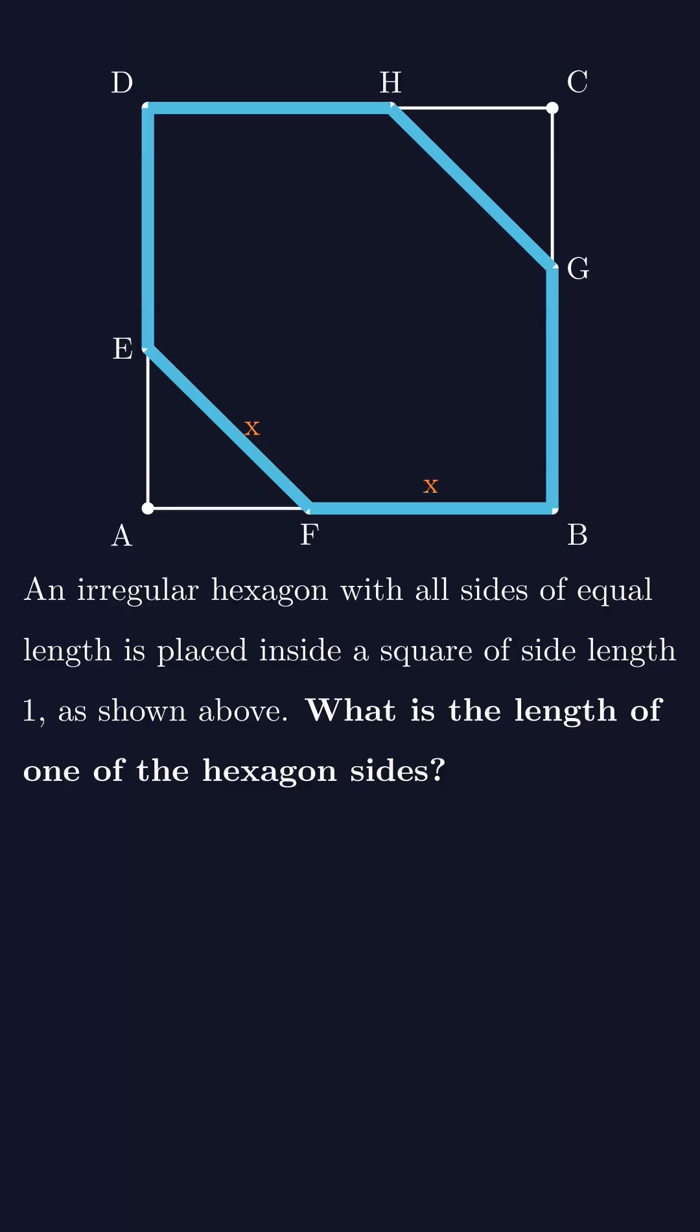That means FB is also x, and since all the sides are equal, every side of the hexagon is x units long.